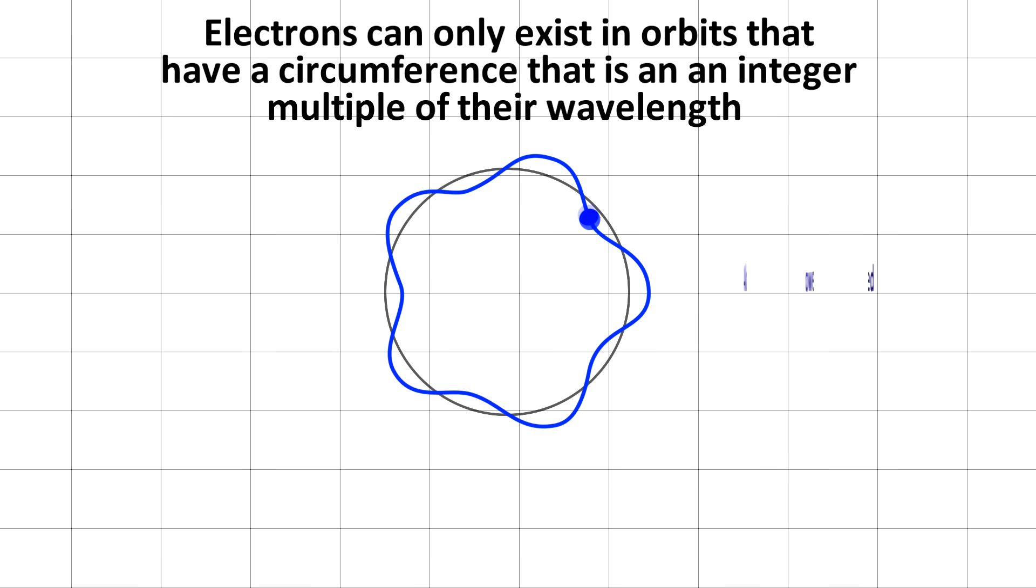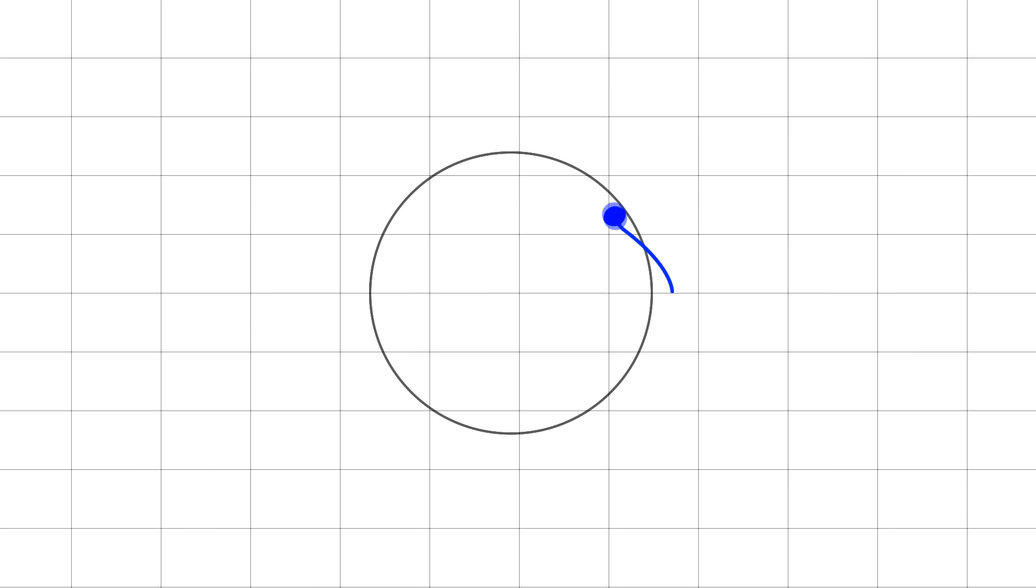De Broglie suggested that electrons can only exist in orbits where their waves interfere constructively. And that can only happen if the circumference of the orbit is equal to the wavelength, or twice the wavelength, or three times the wavelength, or any integer times the wavelength. This made sense and explained why orbits would be at the radii that they are, something that Bohr could not do. The Bohr model was looking more and more legit.